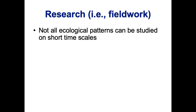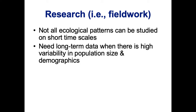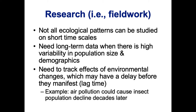Not all of these ecological patterns can be studied on short time scales. A lot of times we need long-term data, especially when there's a lot of variability in population size and demographics. This is one of the challenges with amphibians — they are the most threatened vertebrate order, and a lot of this has to do with their very variable population sizes. It's very difficult to detect a decline if the population goes up and down a lot naturally. We also need to track the effects of environmental changes, which sometimes have a lag time — a delay that you see later on.